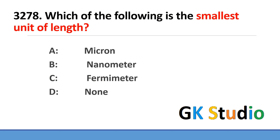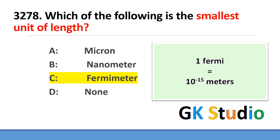Which of the following is the smallest unit of length? Femtometer is the smallest unit of length. One femtometer is equal to 10 raised to power minus 15 meters.